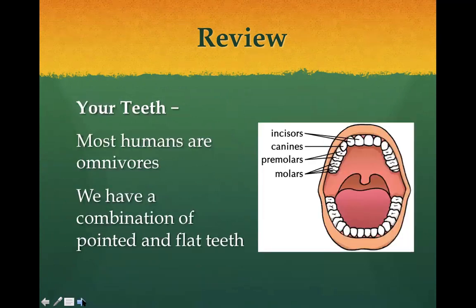Omnivores eat both plants and animals, so they have both types of teeth. Our teeth — most humans are omnivores, originally made to be omnivores. Personally I'm a vegetarian, so even though I've got those canine teeth, my teeth are great for eating plants. But humans have a combination of pointed and flat teeth, so we're adapted in that way.